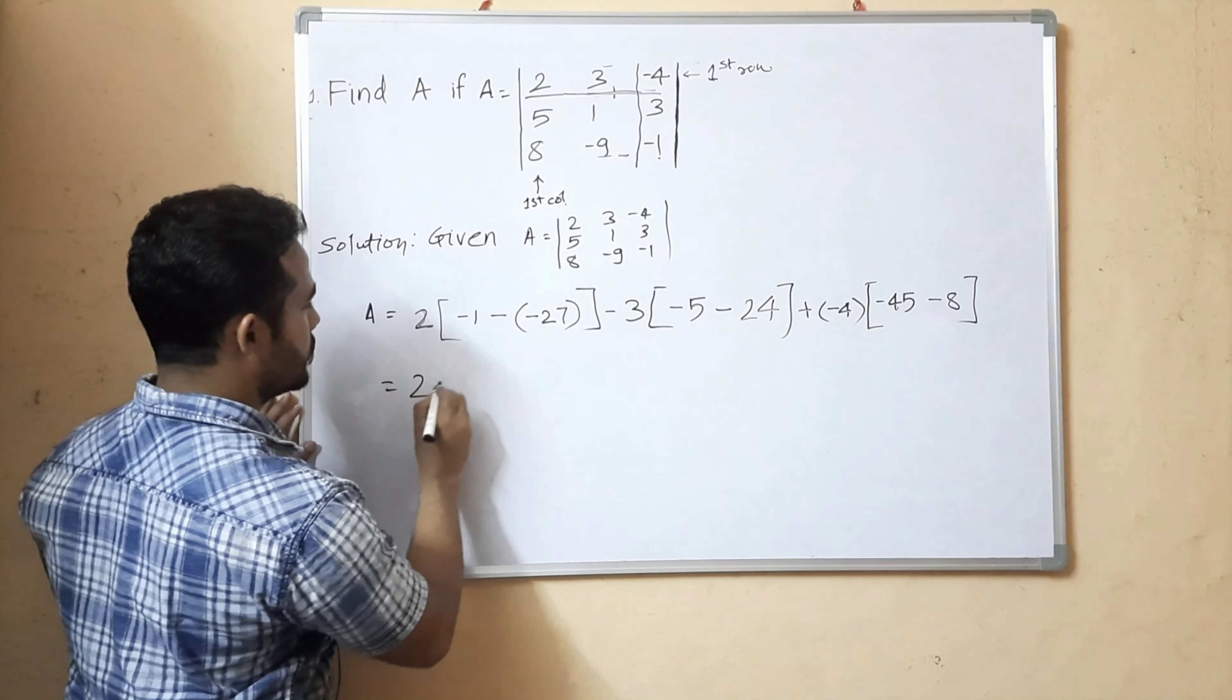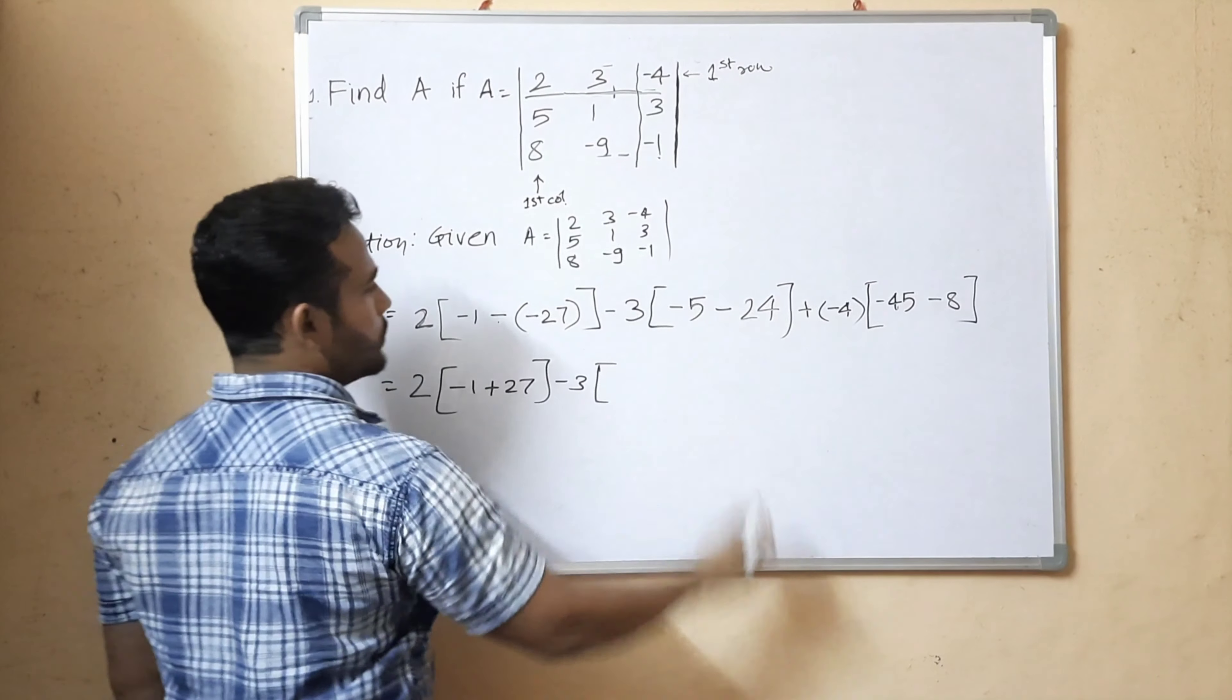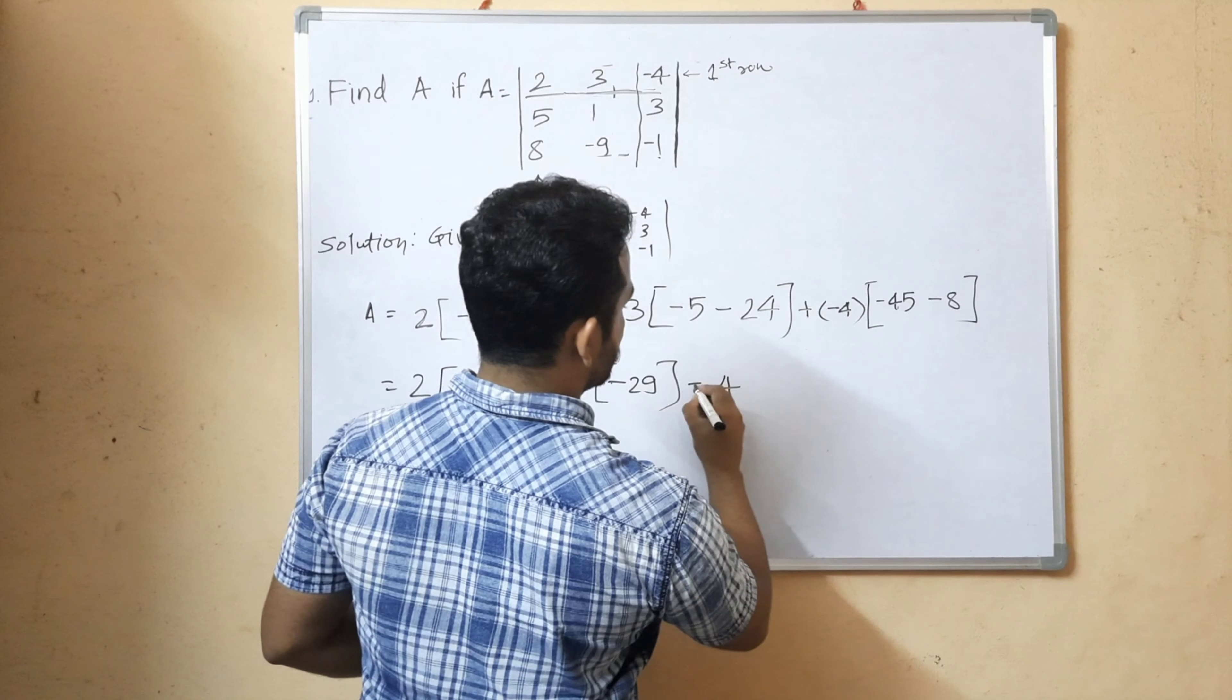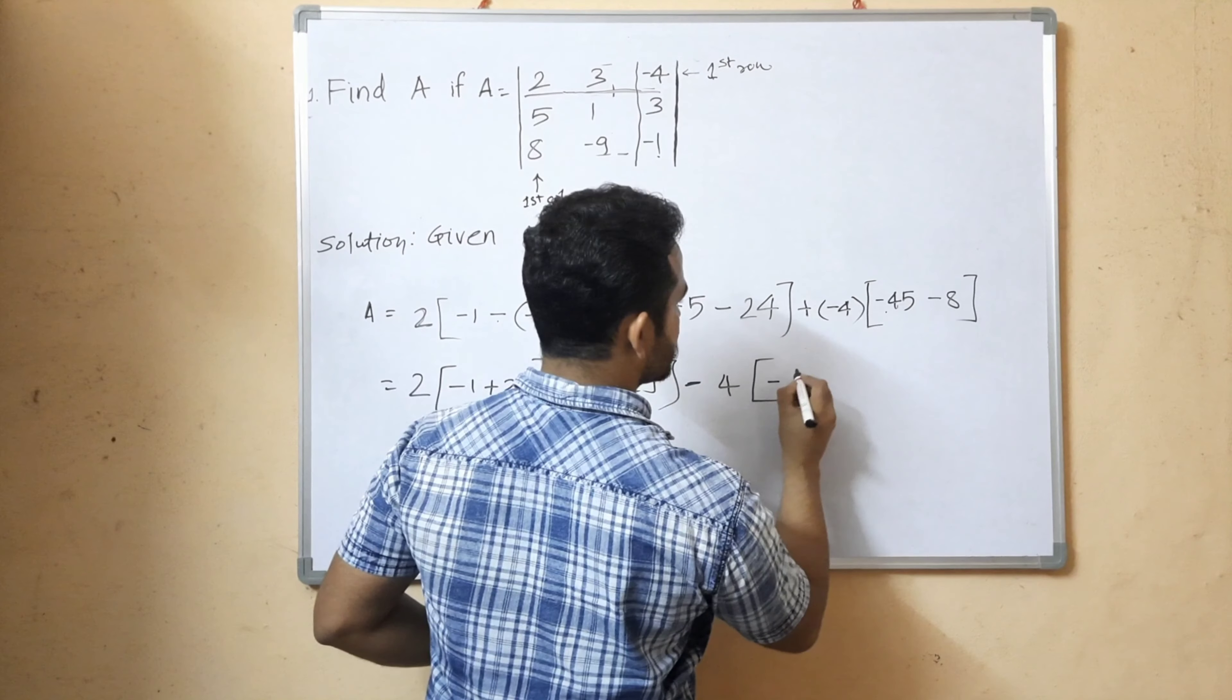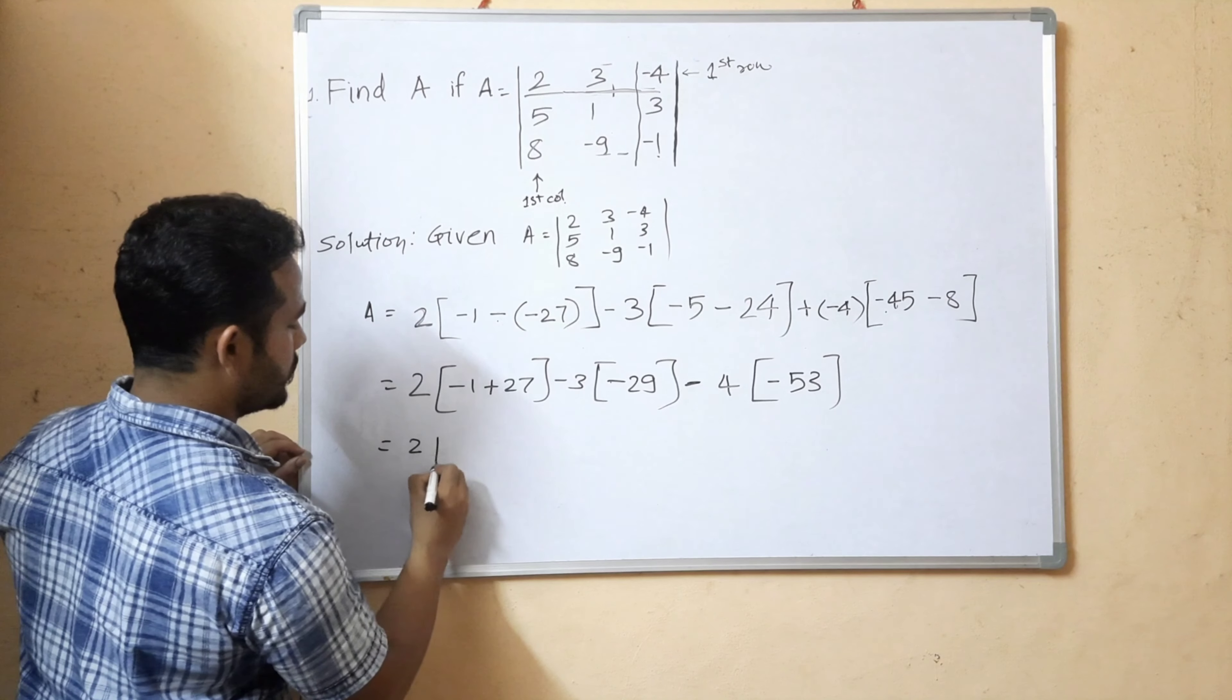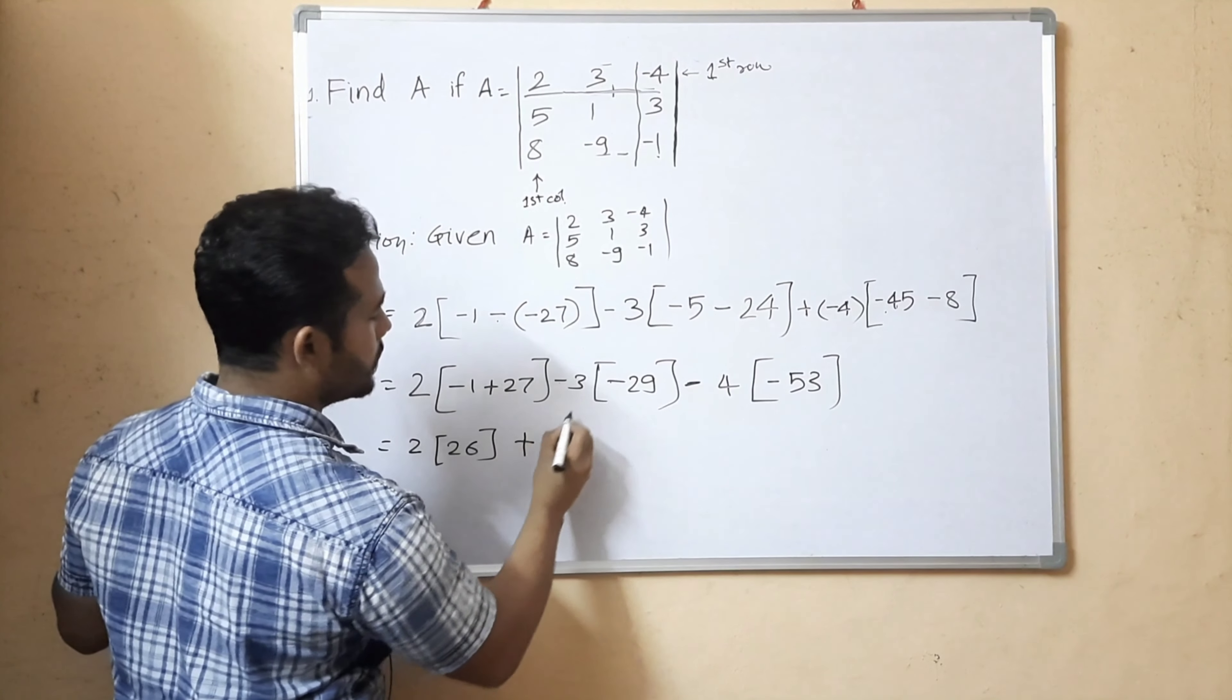We solve the equation: equals 2 times [minus 1 plus 27] minus 3 times [minus 5 minus 24, which is minus 29] plus minus 4 times [minus 45 minus 8, which is minus 53]. This equals 2 times 26 minus 3 times minus 29 plus 4 times minus 53.